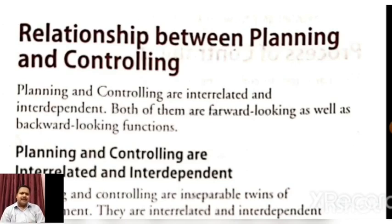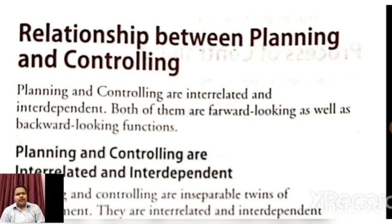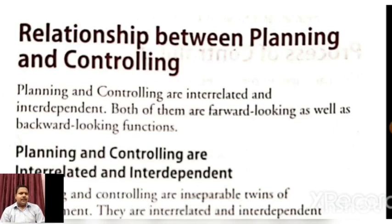Controlling के बाद जब हम future plan करेंगे, तो controlling से जो results, corrective actions और deviations आयेंगे उनको ध्यान में रख कर फिर plan करेंगे। यानि planning helps to control, and control helps to make a new plan. Planning controlling के लिए base होती है, जिसकी help से हम control करते हैं, और control से आने वाले results से हम नए plan की ओर move होते हैं। So planning and controlling are interrelated and interdependent, both of them are forward looking as well as backward looking functions.